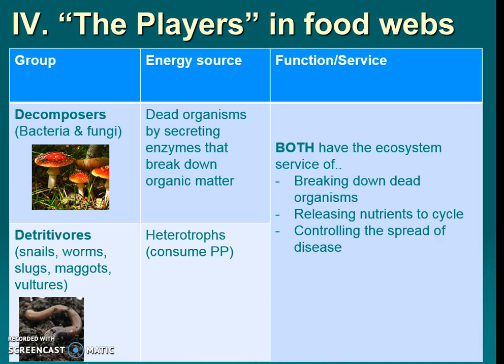We also have decomposers and detritivores. Decomposers are bacteria and fungi — they break down dead and decaying organisms by secreting enzymes. Detritivores actually consume the primary producers. Both are heterotrophs, and both are involved in breaking down dead material.